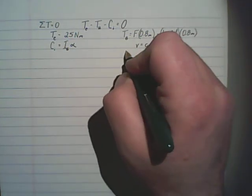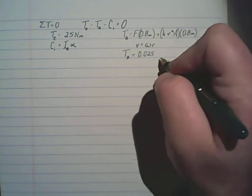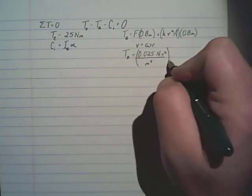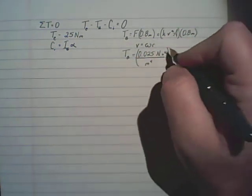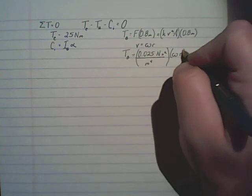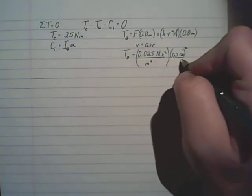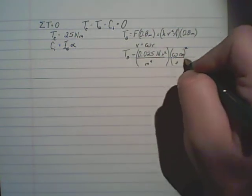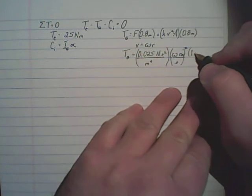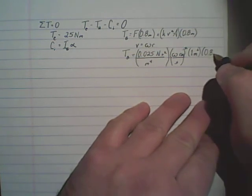So, T sub B is equal to k, which is 0.025, with units of newtons, second squared, per meters to the fourth. That's k. V is equal to omega r squared. Omega r is going to have units of meters per second, so velocity. And we're multiplying that times the area, which is 1 meter squared. And then finally, we're multiplying that by the moment arm, 0.8 meters.